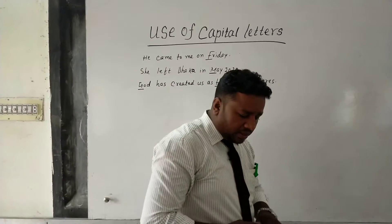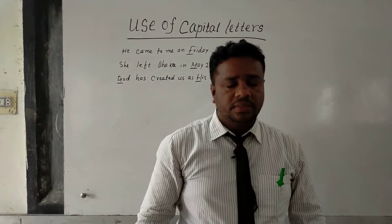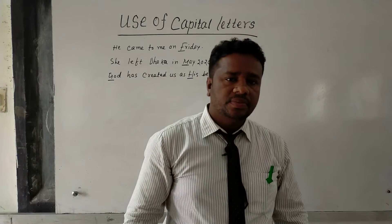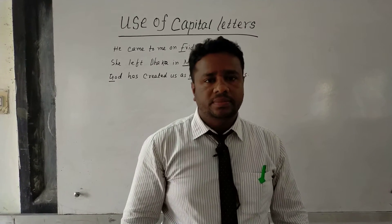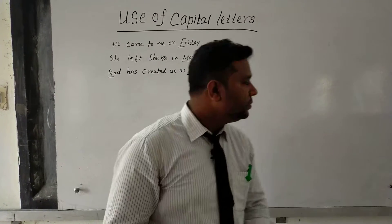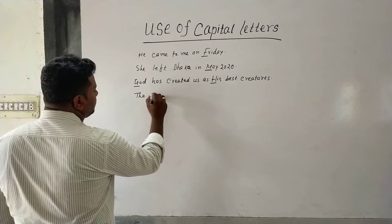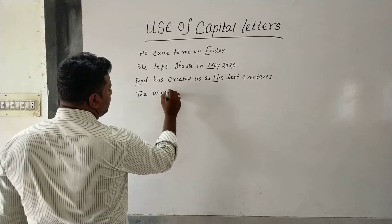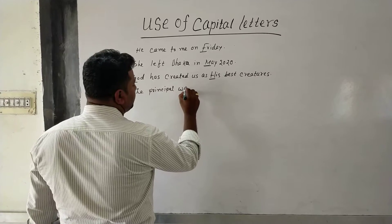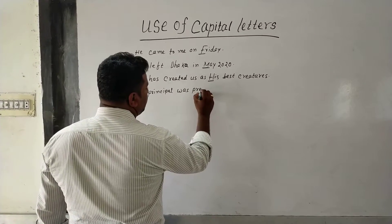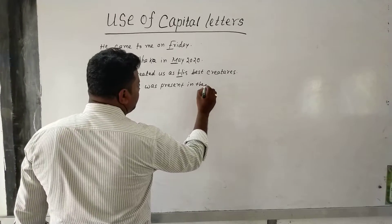Rule seven: the names of professions used as titles, degrees, and official designations begin with capital letters. For example, 'The Principal was present in the meeting.'